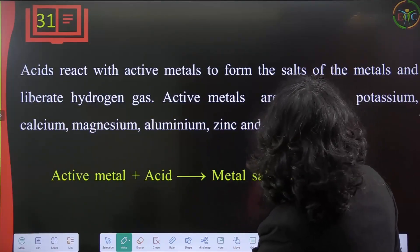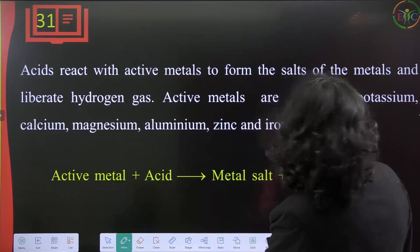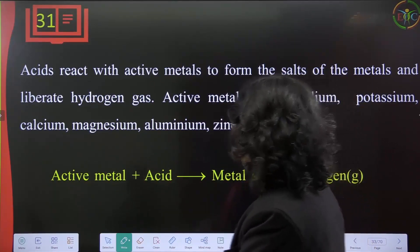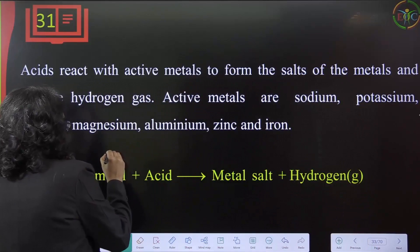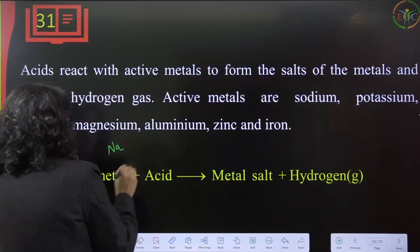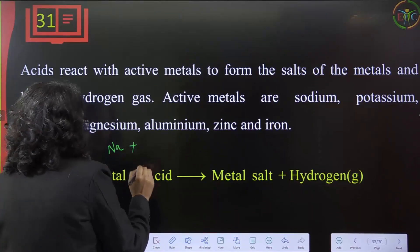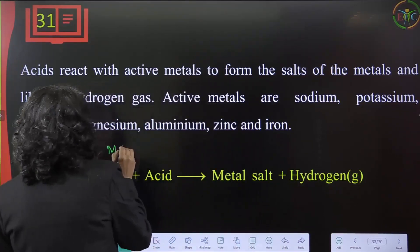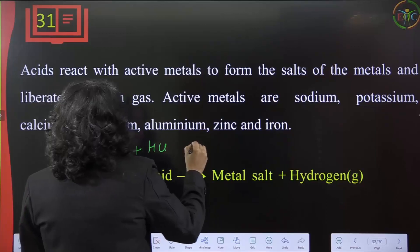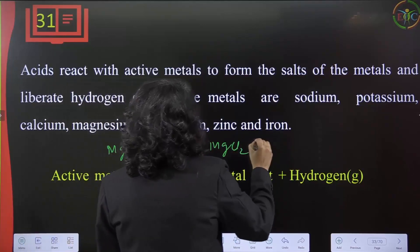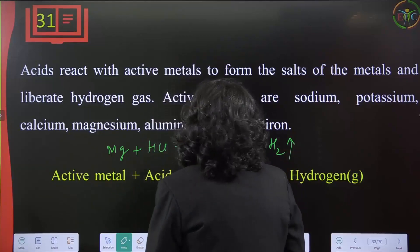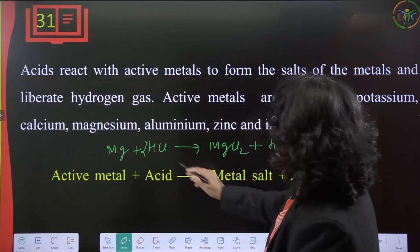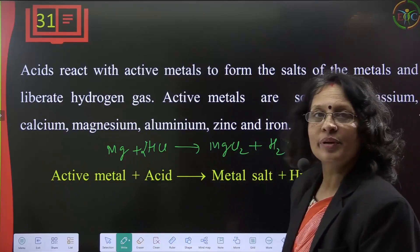Acids react with active metals to form salts of the metals and liberate hydrogen gas. Active metals include sodium, potassium, and calcium. For example, magnesium reacts with HCl and hydrogen gas is liberated.